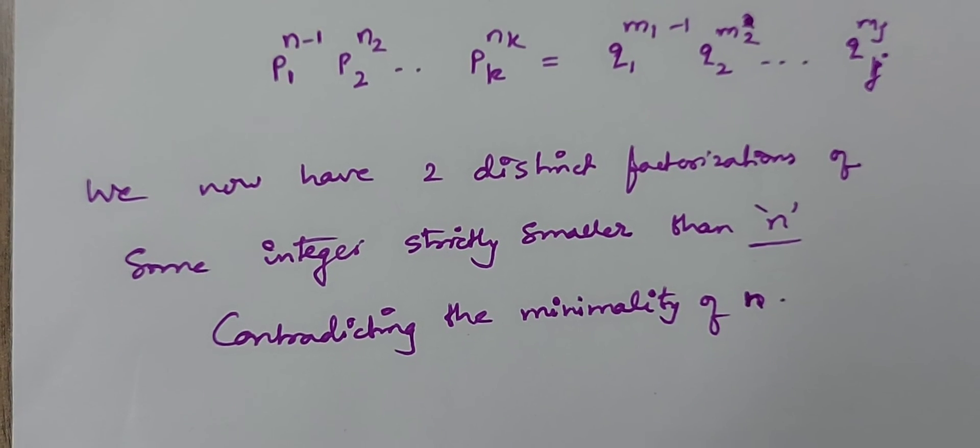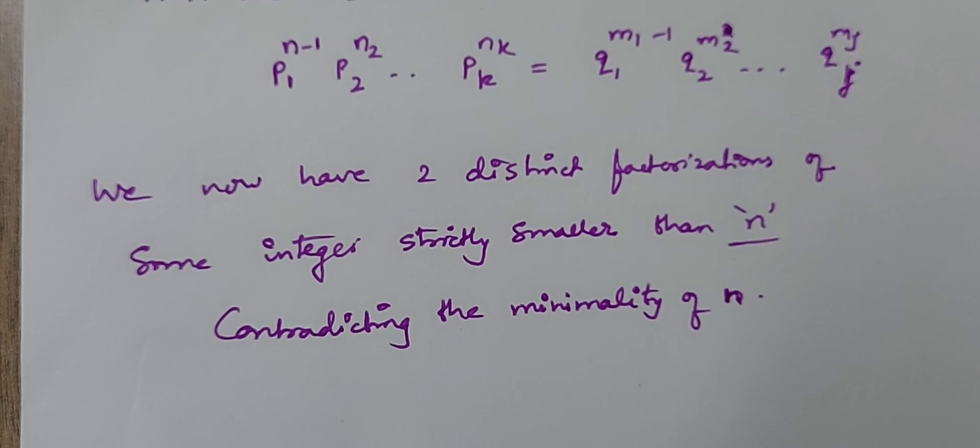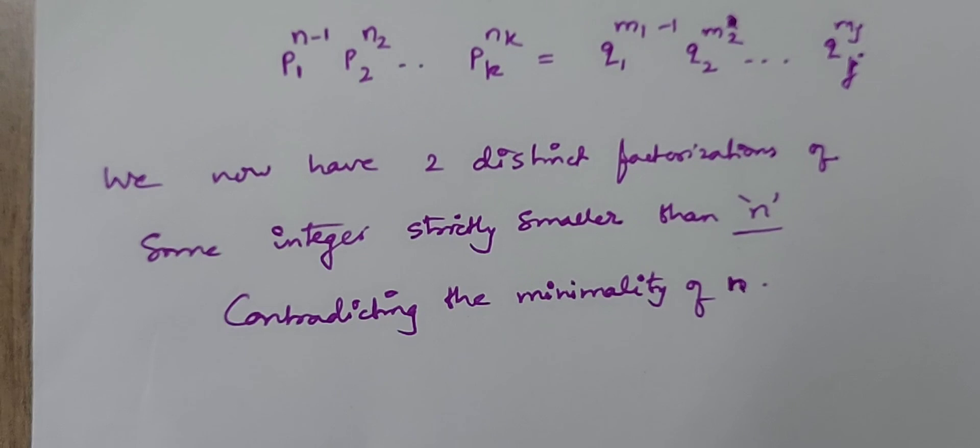So there is the contradiction — our assumption was false. Every integer greater than 1 has a unique prime factorization. We proved the uniqueness part using proof by contradiction, making use of Euclid's lemma, to prove the uniqueness part of the fundamental theorem of arithmetic. I hope it is clear. If you have any doubts, please comment in the comment section below. Thank you, and we will see you in the next video.